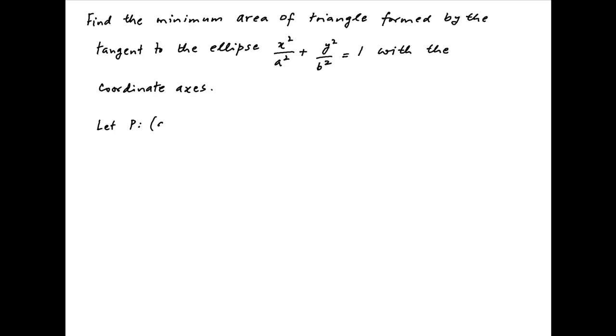Let P be any point on the ellipse x squared upon a squared plus y squared upon b squared is equal to 1, and let the coordinates of P be a cos phi, b sin phi.